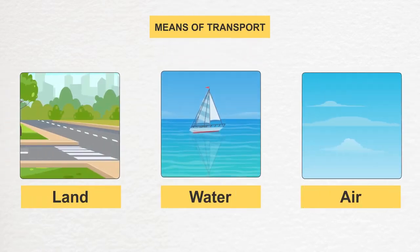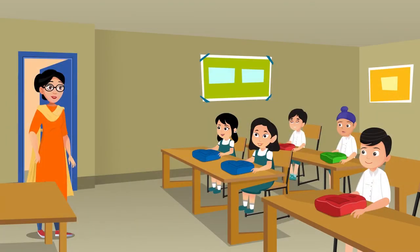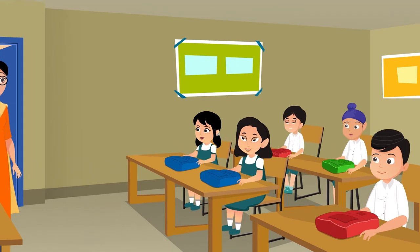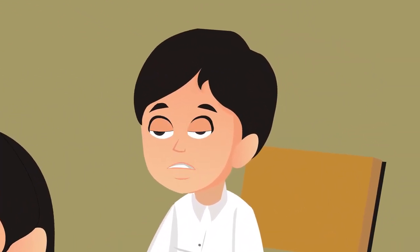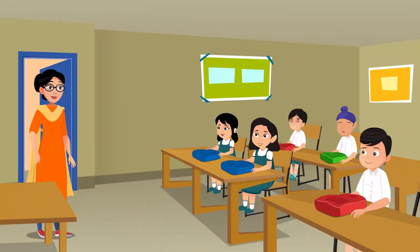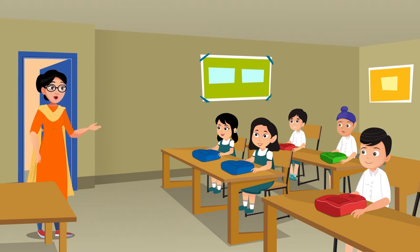The teacher explained: let's understand means of transport. Means of transport are of three kinds — land, water, and air. Land transport includes roads and railways. A student asked: ma'am, all these modes of transport did not exist in old times — did humans walk to every place back then? The teacher responded: good question! In ancient times, vehicles like cars, buses, and autos did not exist.